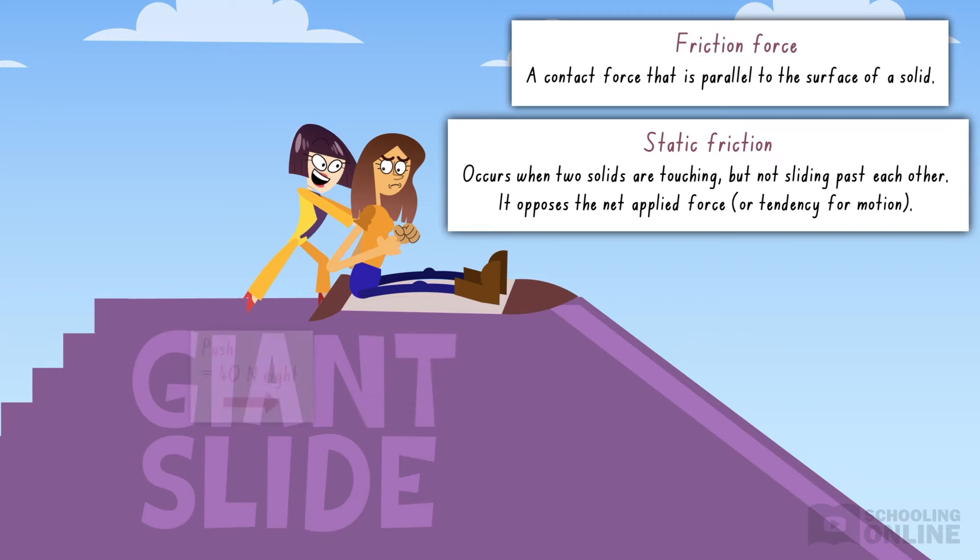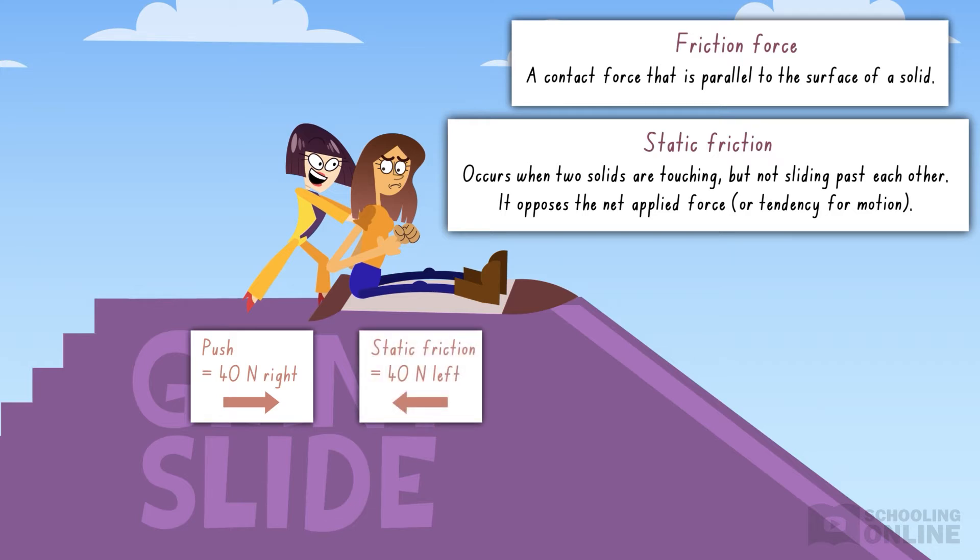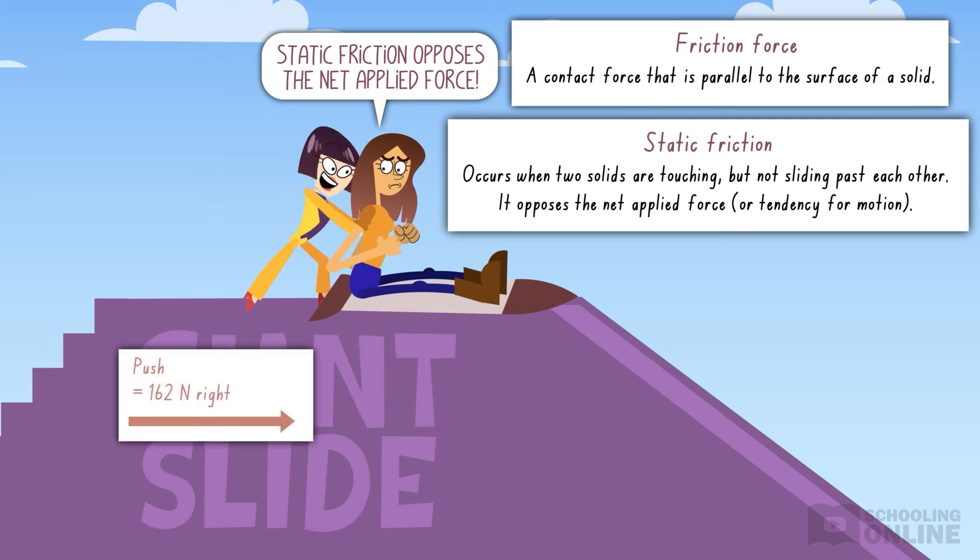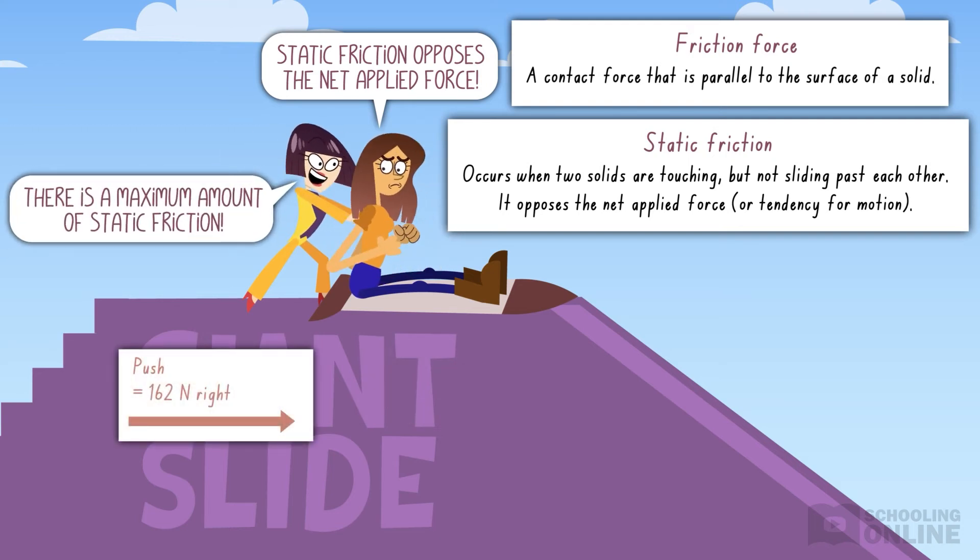Next, Lotus pushes twice as hard, but Brooke remains still. Static friction has the same magnitude as the net applied force because it tries to prevent any sliding motion. Both forces increase at the same rate until a maximum amount of static friction is reached, 162 Newtons left.